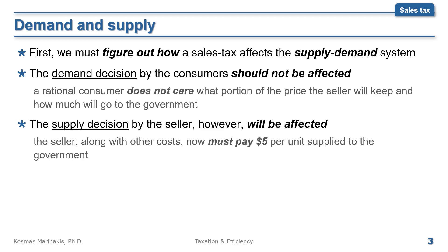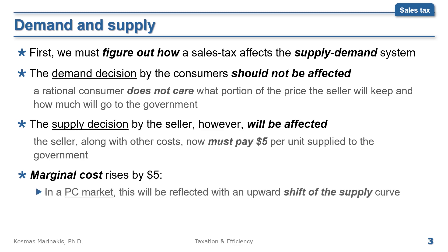Therefore, the marginal cost rises by $5. In a perfectly competitive setting, this will be reflected with an upward shift of the supply curve, because as we know, in perfect competition, the marginal cost of production is behind the supply curve.